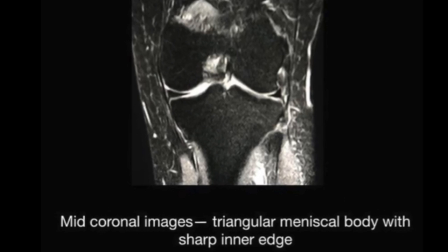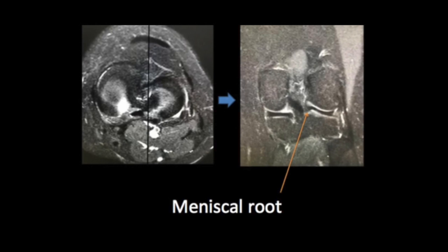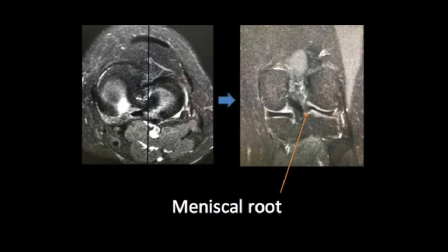A specific structure to look for is the meniscal root. The root is best seen in the coronal view and we have to correlate with the axial as well as sagittal planes for root tears. Here is one example of an abnormal signal intensity traversing right up to the articular surface, therefore classified as a tear — another example being a vertical tear.